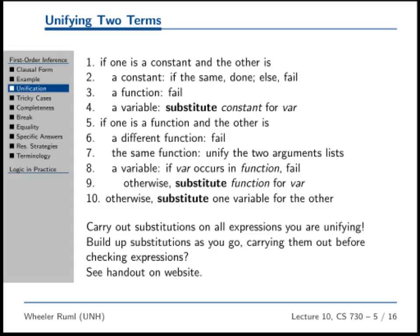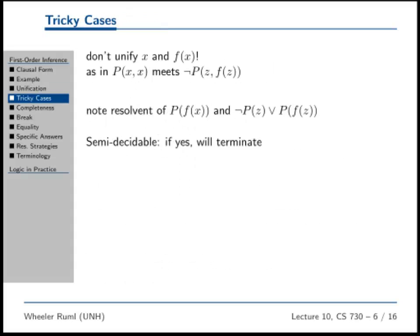So what if I'm trying to unify a function and a function? Check out the argument list. A function and a variable? Well, we're just going to substitute in the function where the variable occurs unless the variable is occurring in the function. Now why wouldn't we want to allow that? Why don't we want to allow unifying x and f of x?